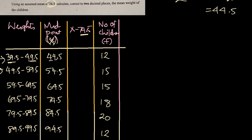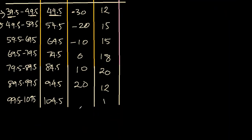So 44.5 minus 74.5 is straightforward, is 30 lesser. So it will be minus 30. Then we'll have minus 20 here, minus 10, 0, positive 10, positive 20, and then positive 30.